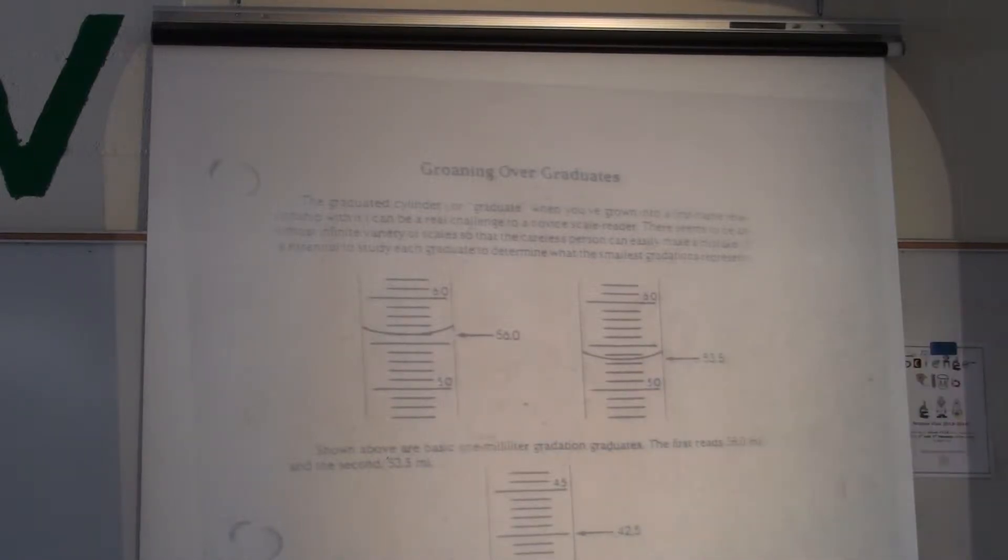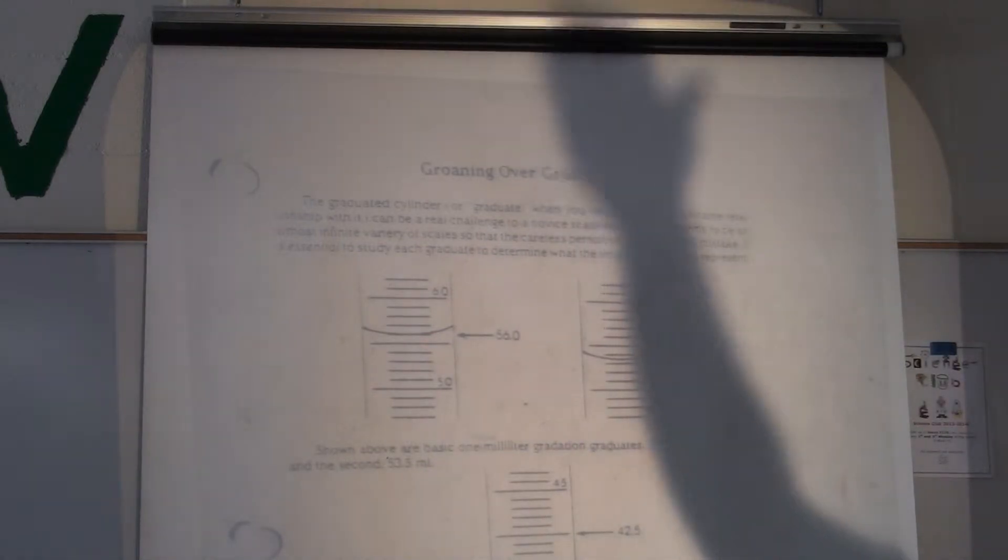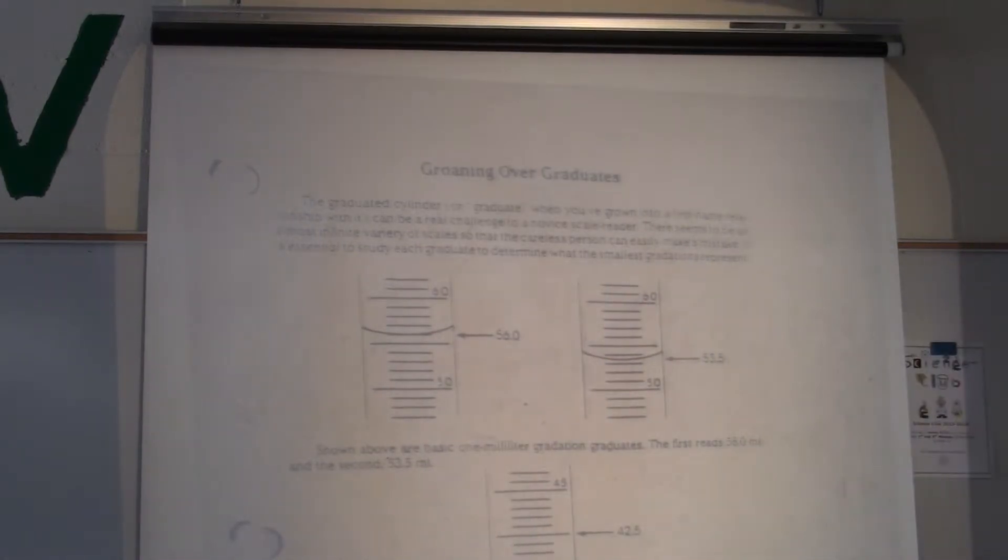If the graduates go up by tens, Kyla—10, 20, 30, 40, 50, 60, 70, 80, 90, 100, 110, 120—then you guess out to the ones. So you might guess that I've got 112 milliliters, I'm guessing to the ones place.